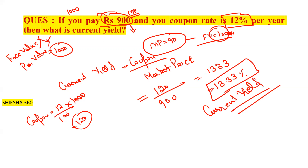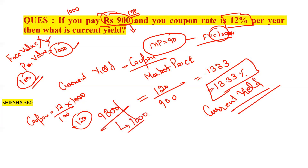They are saying you are paying rupees 900 — that is the market price, so the bond is at a discount and face value is rupees 1000. If they say you are paying rupees 90, then face value is taken as rupees 100. If they are saying rupees 9800, we will not take 10,000 as the face value but rather 10,000. Depending upon the situation, we take the face value accordingly.